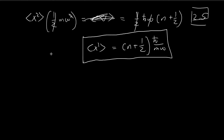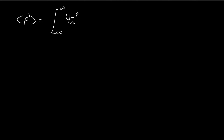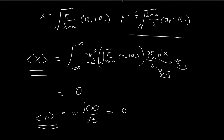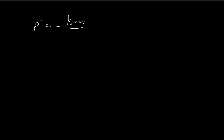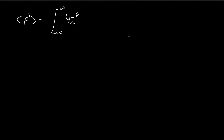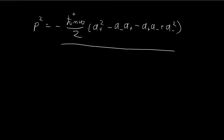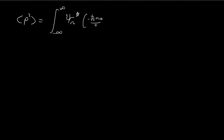We've found ⟨x²⟩ already in example 2.5, so now all that remains is to find the expected value of p squared. The expected value of p² equals the integral of the conjugate of ψ_n times p² times ψ_n dx. We square the momentum operator expression: the i becomes negative, giving us −ℏmω/2, and then the operators combine to give us an expression we substitute directly.